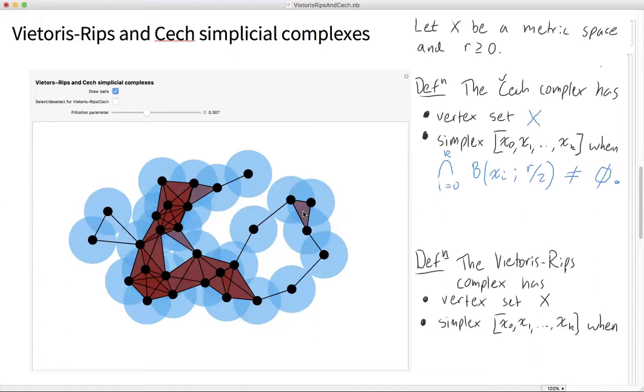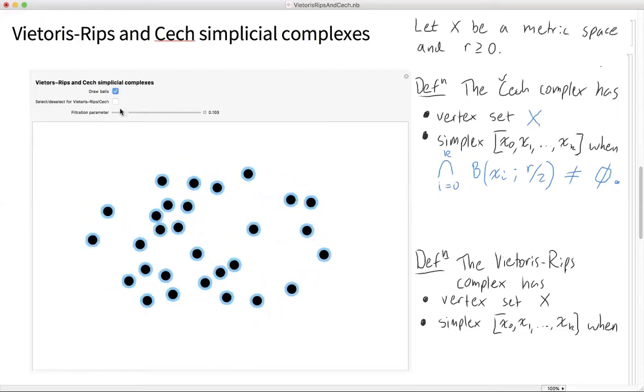And so at this particular scale parameter, we now see that, well, let's start at lower scale parameters. So at low scale parameters, the balls are all just single points. None of the balls intersect. So our Čech complex is just the set of points.